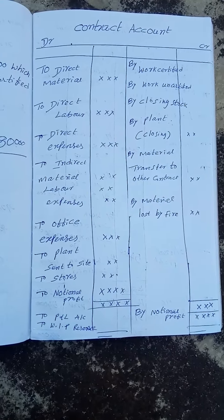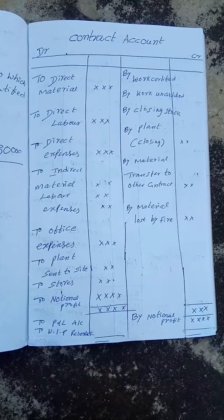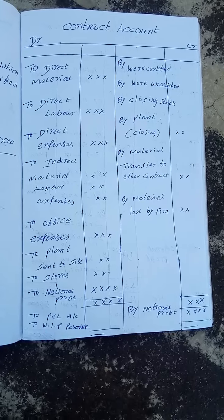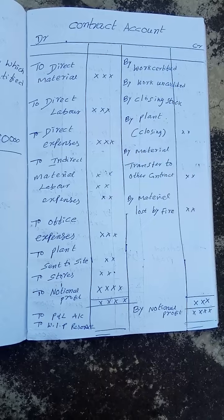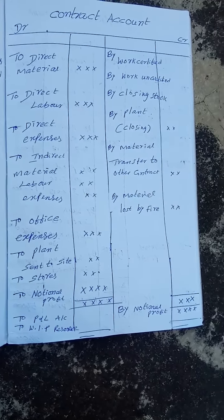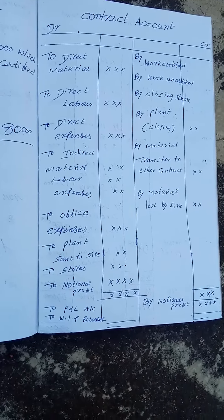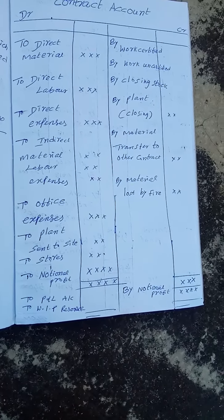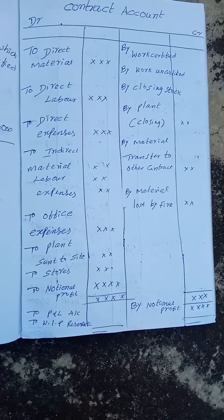In contract costing, contractors prepare a contract account. The pro forma shows that all expenses including plant are to be debited. Closing balances — work in progress, works certified, and work uncertified — should be taken to the credit side. If the contract is incomplete, the profit is called notional profit. A part of the notional profit is transferred to the P&L account and the remaining part is transferred to work in progress reserve.